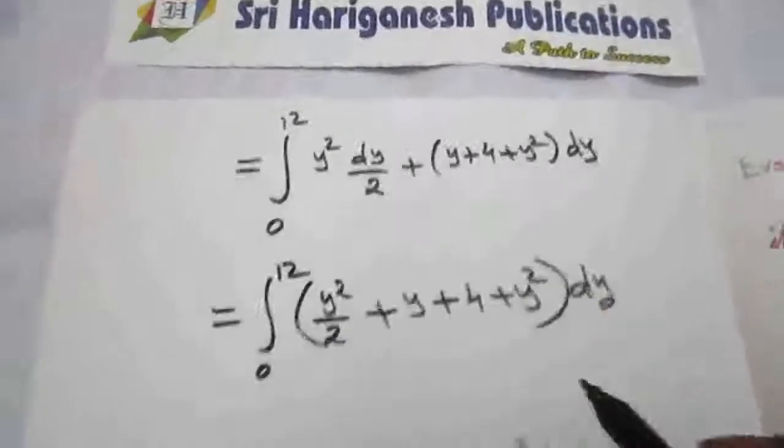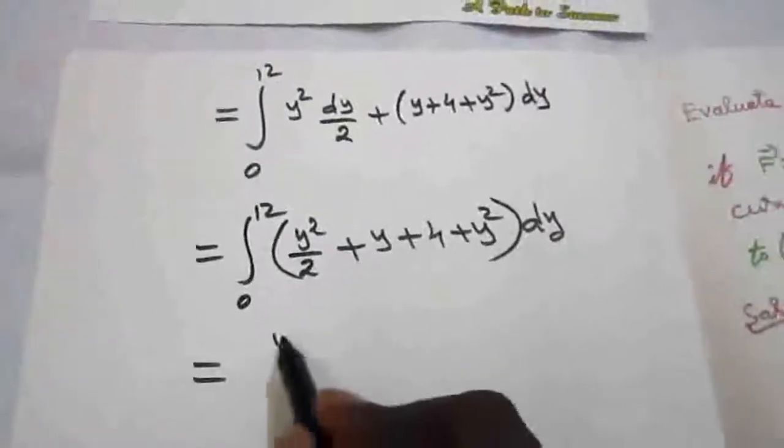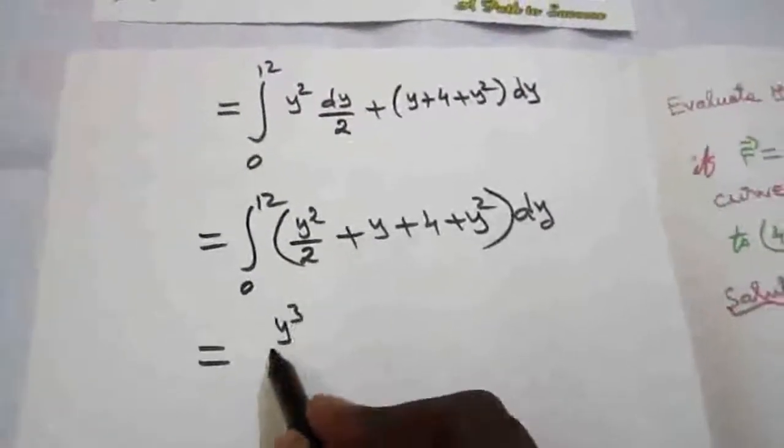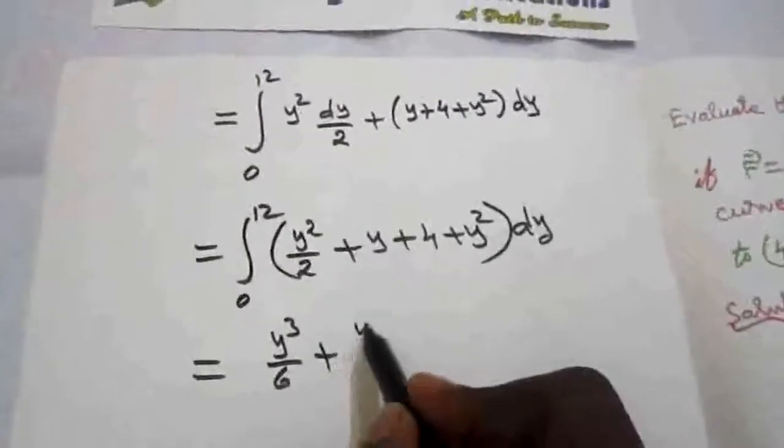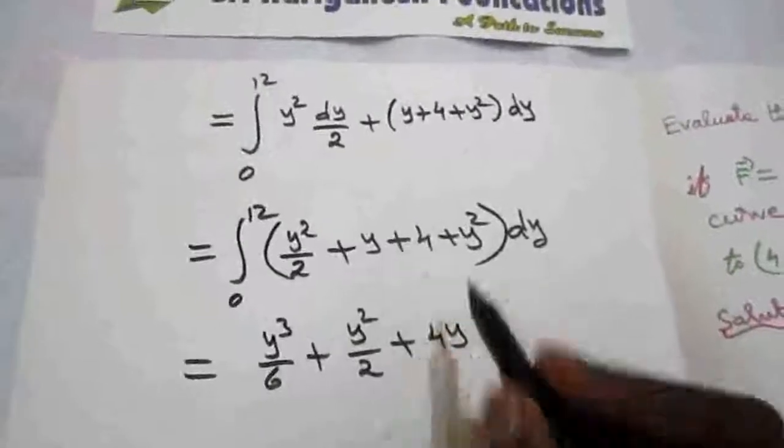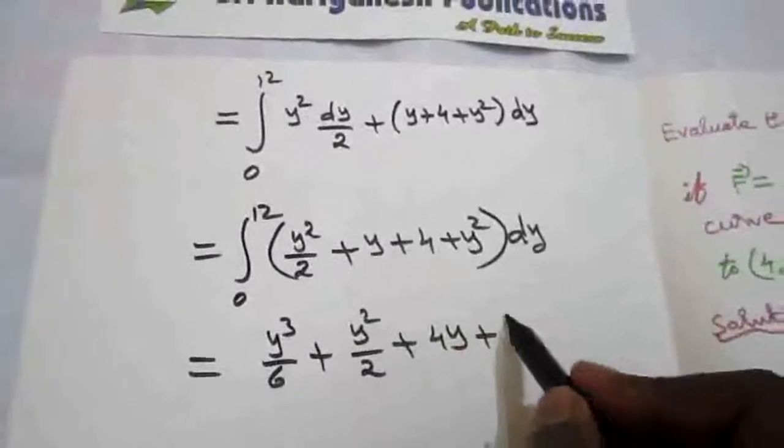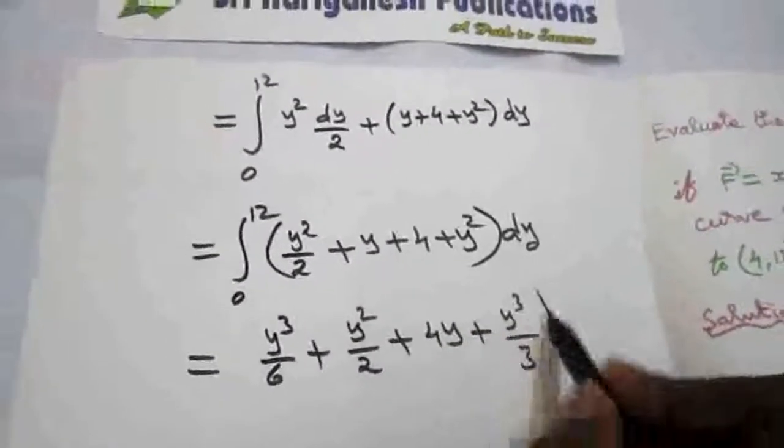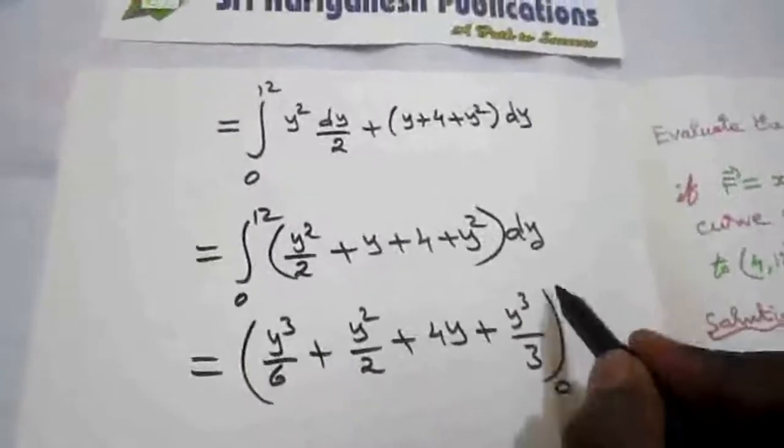So now I am going to integrate with respect to y. So this is y³/3, 3 to 6, and this is y²/2. This is 4y. Constant integral is y. And y² integral is y³/3. The limit for y is 0 to 12.